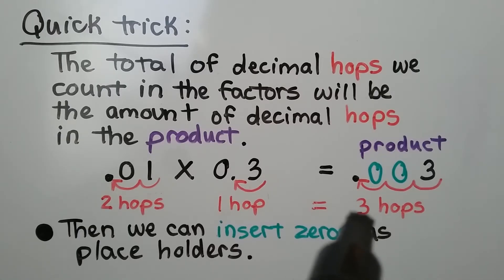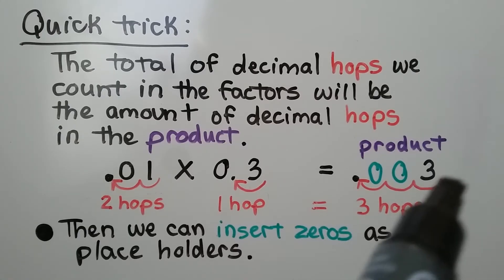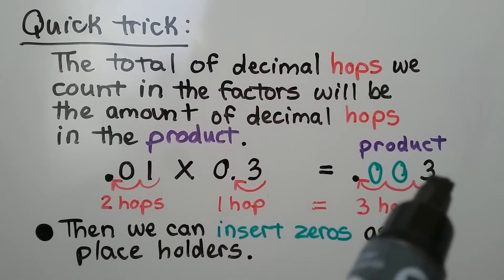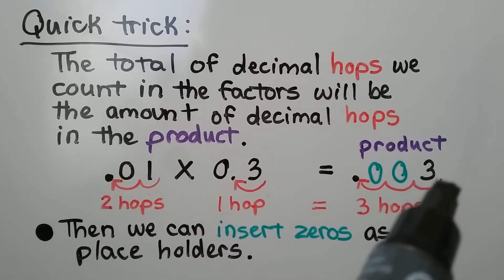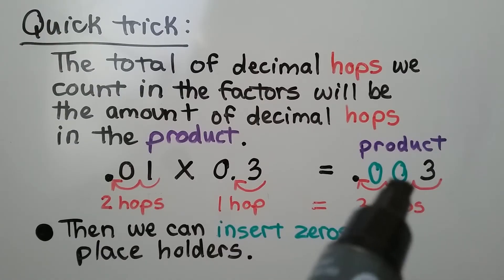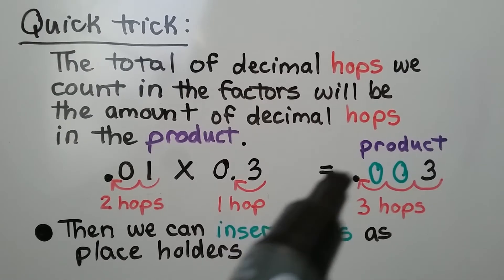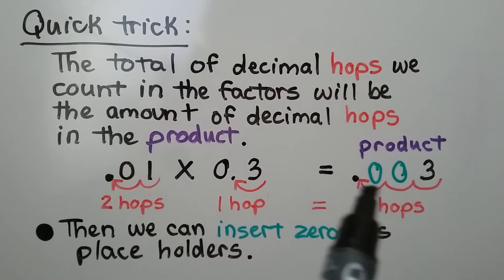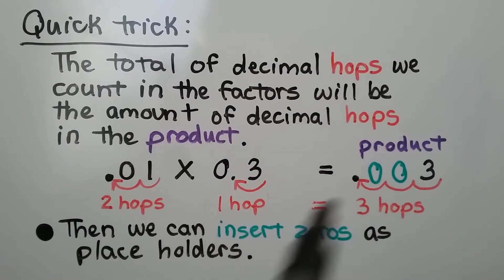In all, our product is going to have 3 hops to get to the decimal point. So it's going to start here and go 1, 2, 3 hops, and then we can insert zeros as placeholders. 1 hundredth times 3 tenths is equal to 3 thousandths.